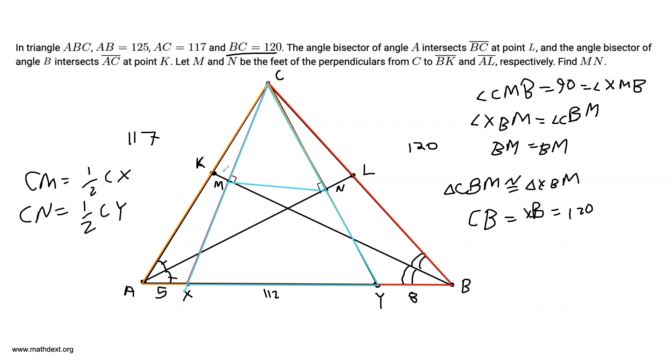And furthermore, angle MCN is equal to angle XCY. So triangle CMN is actually similar to triangle CXY, using side-angle-side similarity. And we also have the similarity ratio is one half, which means that MN is half of XY.